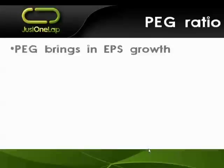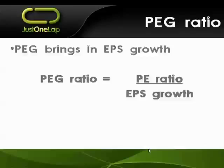Our PEG ratio then says, okay brilliant, what about earnings per share growth? So what we've got is the PE ratio, which we determined from price and earnings, and what's critically important is how fast are those earnings growing? That's what can tell us whether that PE is a viable number or perhaps a completely useless number.